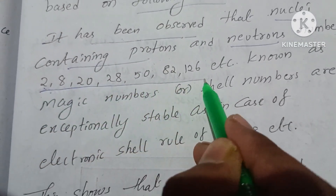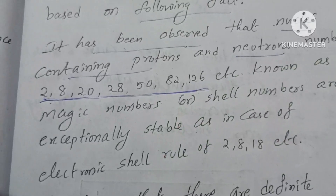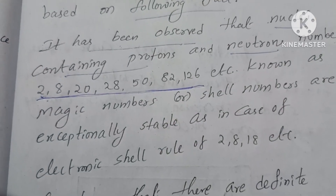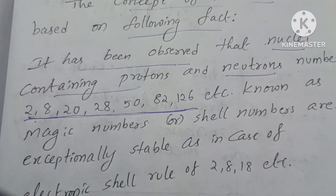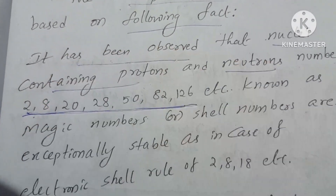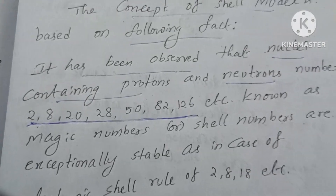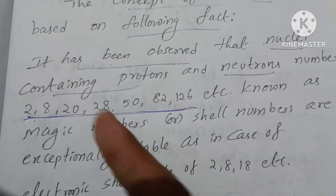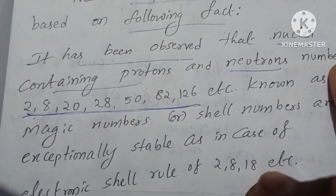The concept of the shell model is based on the following facts. It has been observed that nuclei containing certain numbers of protons and neutrons — the atomic number — are especially stable.